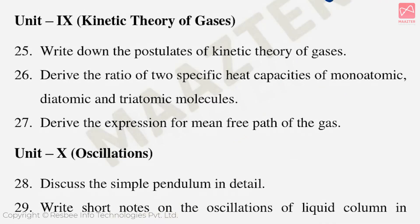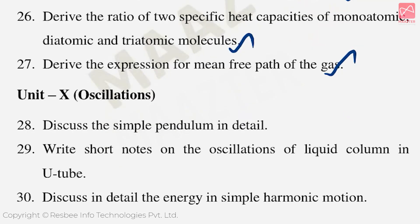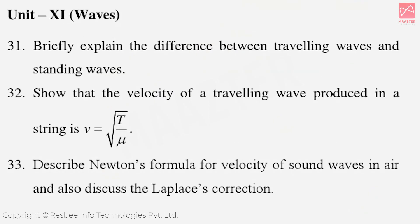Unit 9 Kinetic Theory of Gases — important five-mark questions: Write down the postulates of kinetic theory of gases. Derive the ratio of two specific heat capacities of monoatomic, diatomic and triatomic molecules. Derive the expression for mean free path of gases. Unit 10 Oscillations: Discuss the simple pendulum in detail. Write a short note on the oscillation of a liquid column in a U-tube. Discuss in detail the energy in simple harmonic motion. Unit 11 Waves: Briefly explain the difference between travelling waves and standing waves. Show that the velocity of a travelling wave in a string is V = √(T/μ). Describe Newton's formula for velocity of sound waves in air and discuss the Laplace correction.